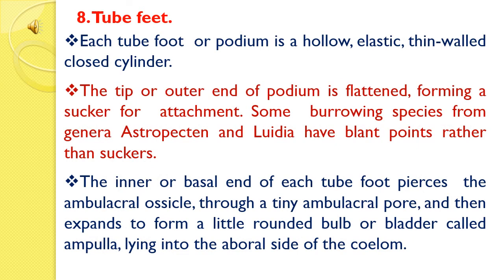Each tube foot or podium is a hollow, elastic, thin-walled, closed cylinder. The tip or outer end of the podium is flattened, forming a sucker for attachment. Some burrowing genera such as Astropecten and Luidia have pointed tips rather than suckers. The inner or basal end of each tube foot passes through the ambulacral ossicles through a tiny ambulacral pore and then expands to form a little rounded bulb or bladder called an ampulla, lying on the aboral side of the coelom.